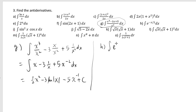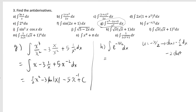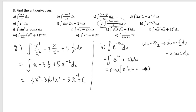For part h, the integral of e to the negative x over 2 dx. Set u equal to negative x over 2, so du equals negative 1 half dx. Multiplying both sides by negative 2, dx equals negative 2 du. This gives the integral of e to the u times negative 2 du. Pull the negative 2 out, and e to the u integrates to e to the u. Substituting back, u is negative x over 2, so the answer is negative 2 e to the negative x over 2 plus c.